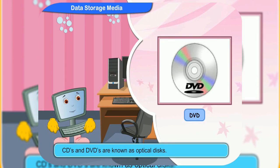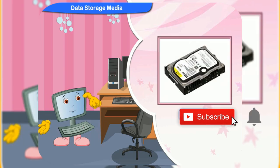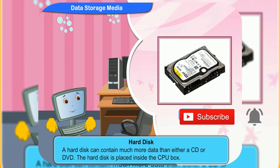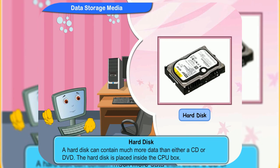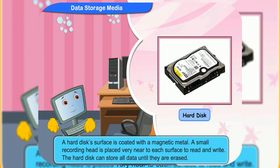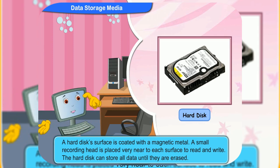CDs and DVDs are known as optical disks. Let me tell you about the hard disk now. A hard disk can contain much more data than either a CD or a DVD. The hard disk is placed inside the CPU box. Look! This is the hard disk. Its surface is coated with a magnetic metal. A small recording head is placed very near to each surface to read and write. The hard disk can store all data until they are erased.